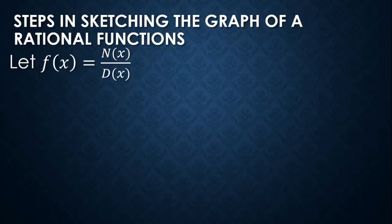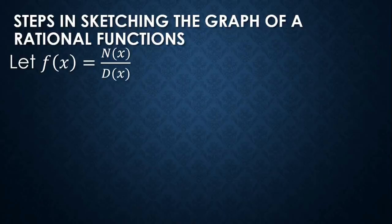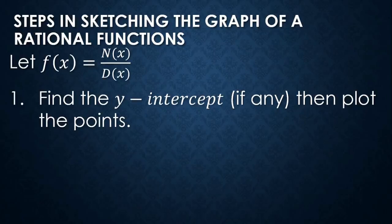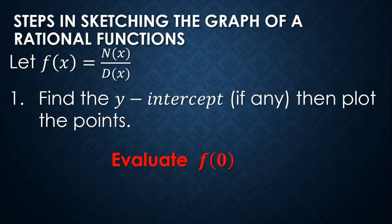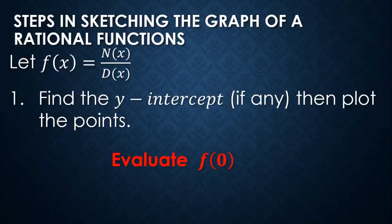If we have a rational function in the form f(x) = n(x) / d(x), where n(x) and d(x) are both polynomials, step number one is to determine or find the y-intercept, then plot the point if there is any. To determine the y-intercept, we evaluate f(0) — that is, we substitute x = 0 into the rational function.